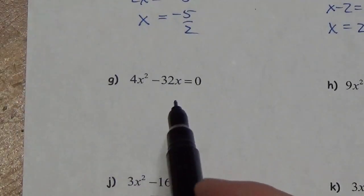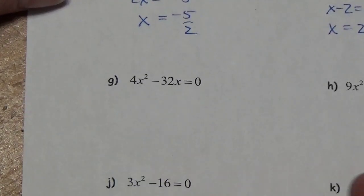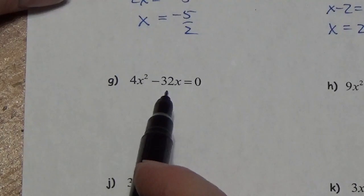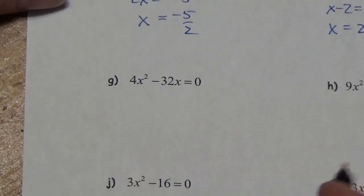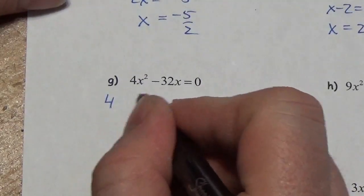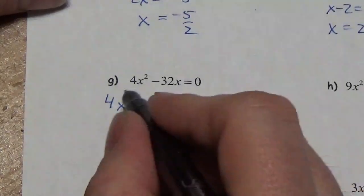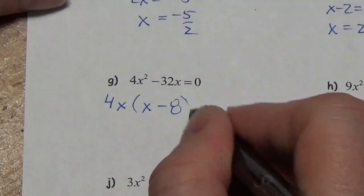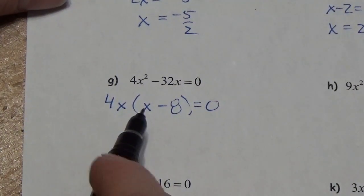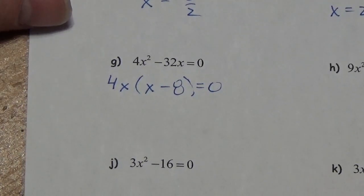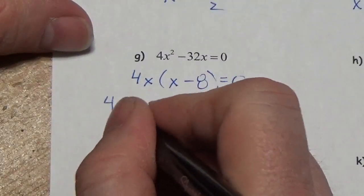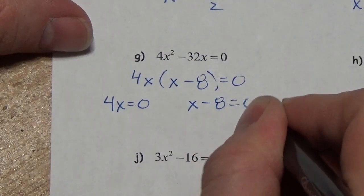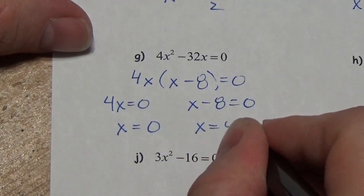Over here I'm back to a quadratic not in factored form, but I've only got two terms. It could be a difference of squares but the second term isn't a perfect square, so I look for a common factor — there's a 4 and an x common to both terms. Factoring out 4x leaves me with (x - 8). So 4x(x - 8) = 0, meaning 4x = 0 or x - 8 = 0, giving x = 0 or x = 8.